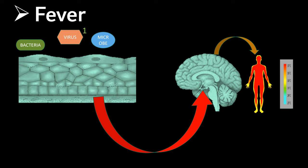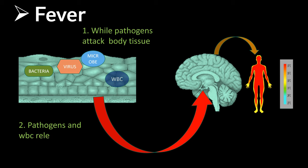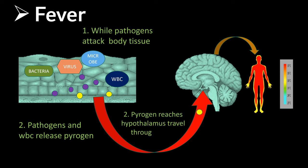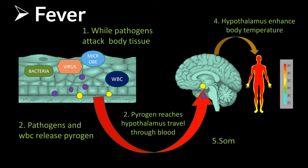Fever: while pathogens attack body tissue, pathogens and white blood cells release pyrogens. Pyrogen travels through the blood and reaches the hypothalamus. The hypothalamus then enhances body temperature. Some pathogens cannot resist this high temperature.